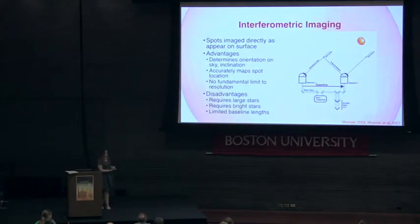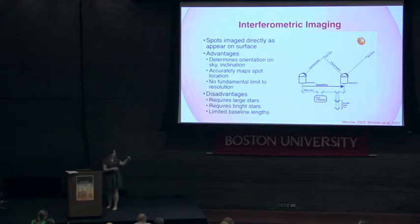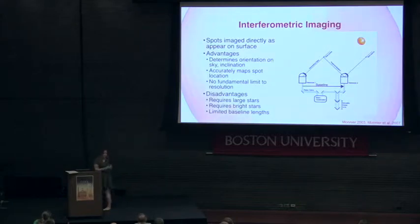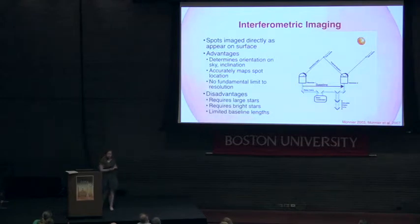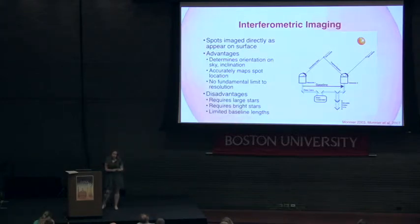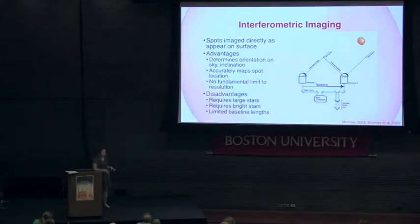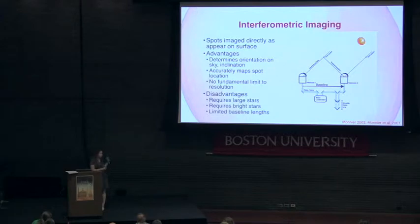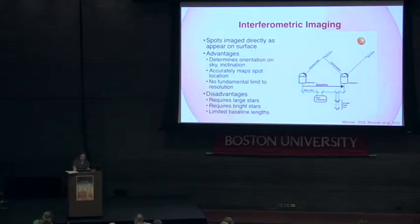The third method is interferometric imaging, where light from a star hits an array of telescopes. The light travels through delay lines to ensure it hits the detector at the same point in time. This allows us to directly see the surface of the star unambiguously. The bigger the interferometer, the smaller the details you can see, but it's expensive to build larger ones, so we're currently restricted to spatially large stars on the order of milliarcseconds that are also rather bright.